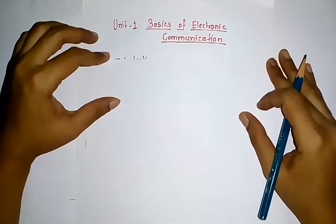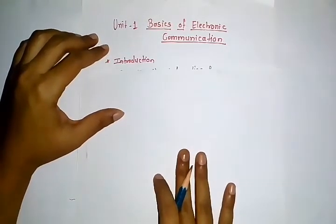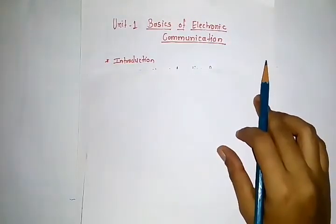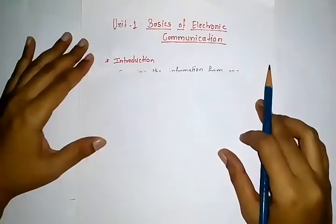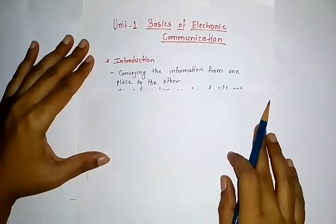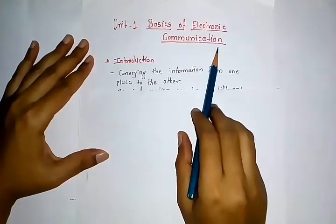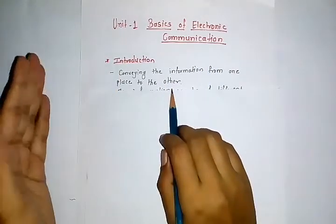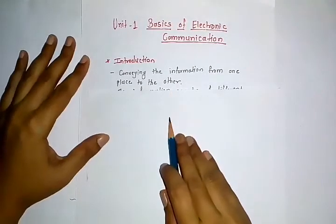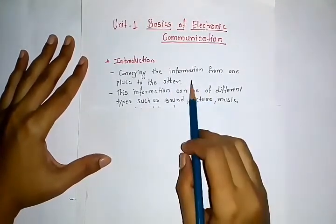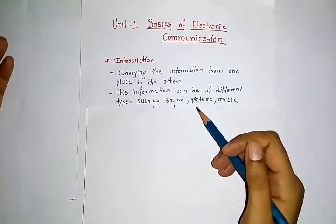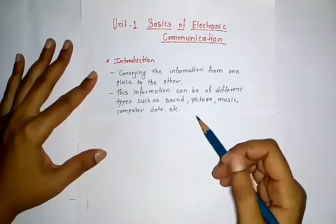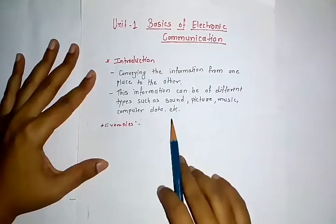Introduction to basics of electronic communication. The first point: what is communication? Communication is conveying information from one place to another, or from one person to another. This information may be in different types such as sound, pictures, music, computer data, etc.